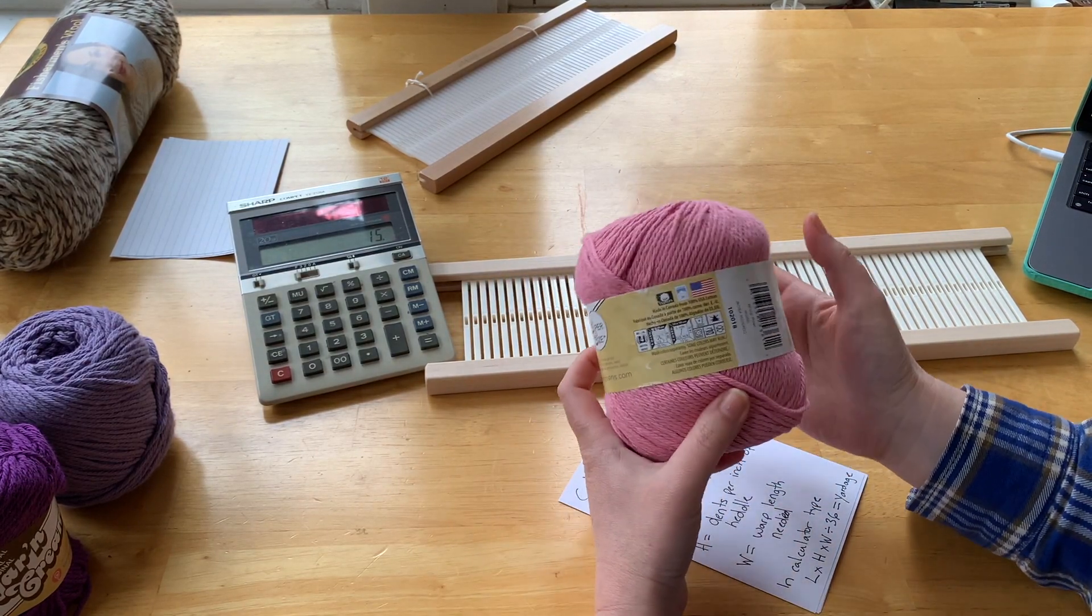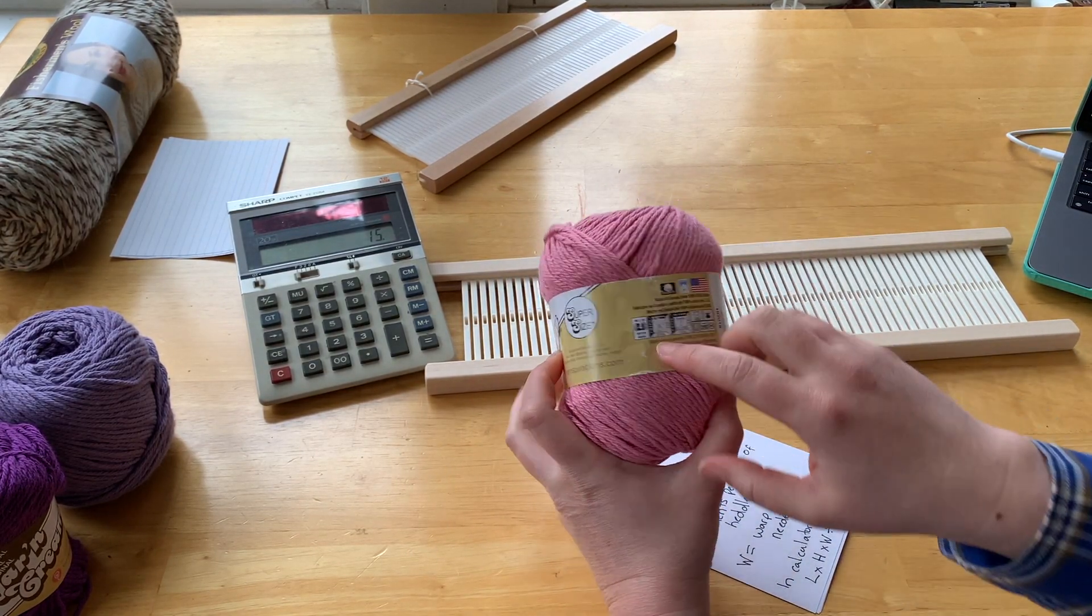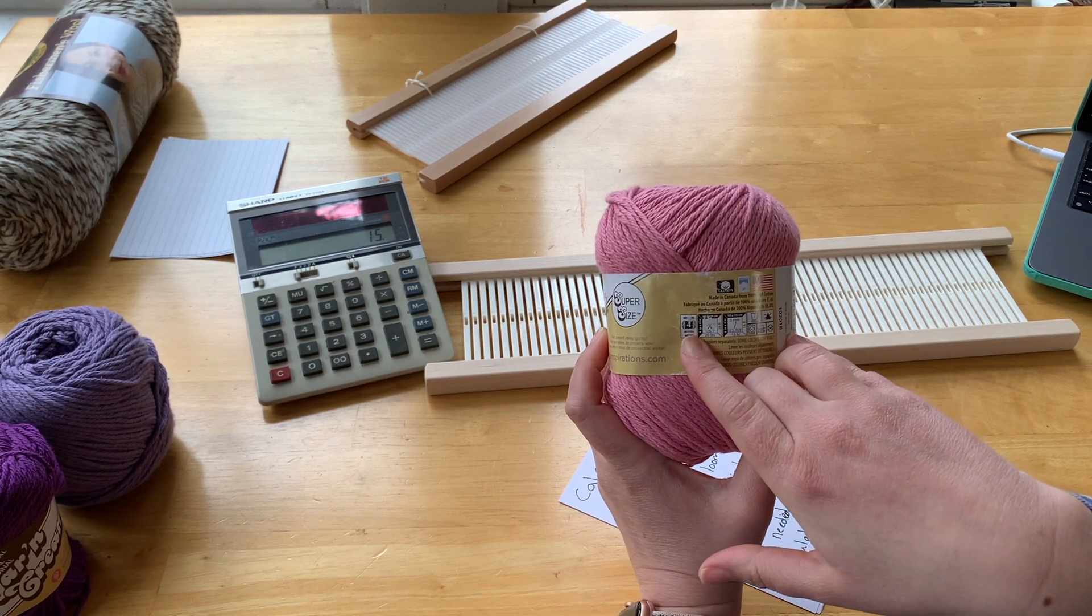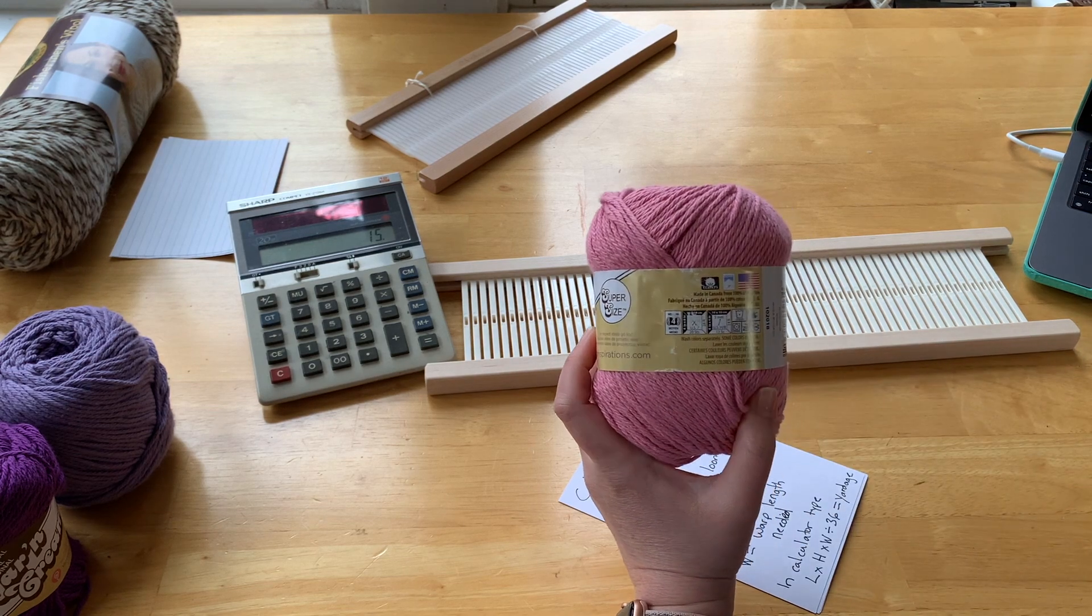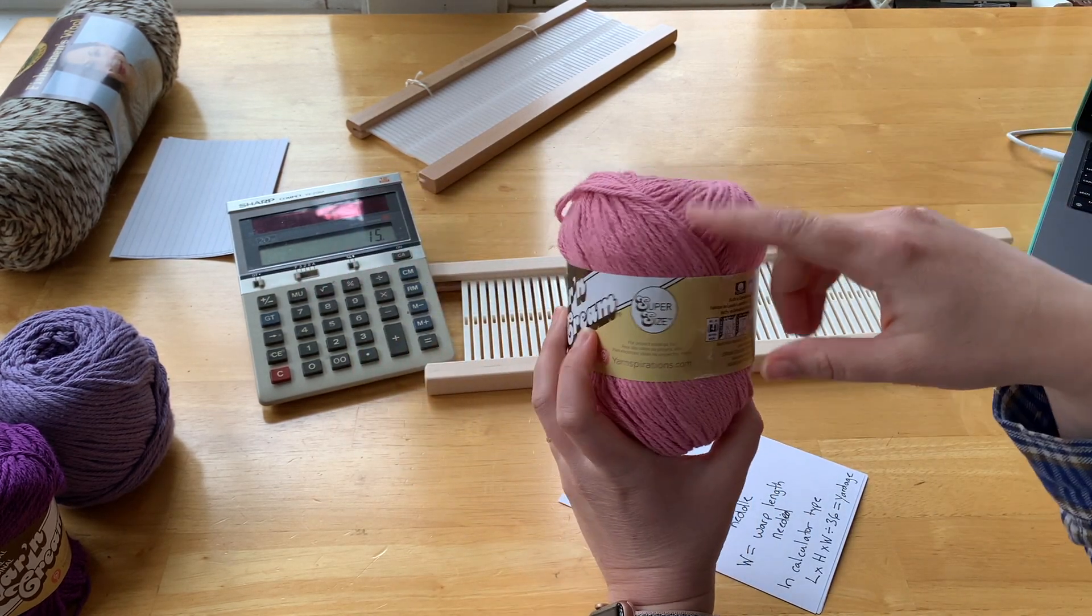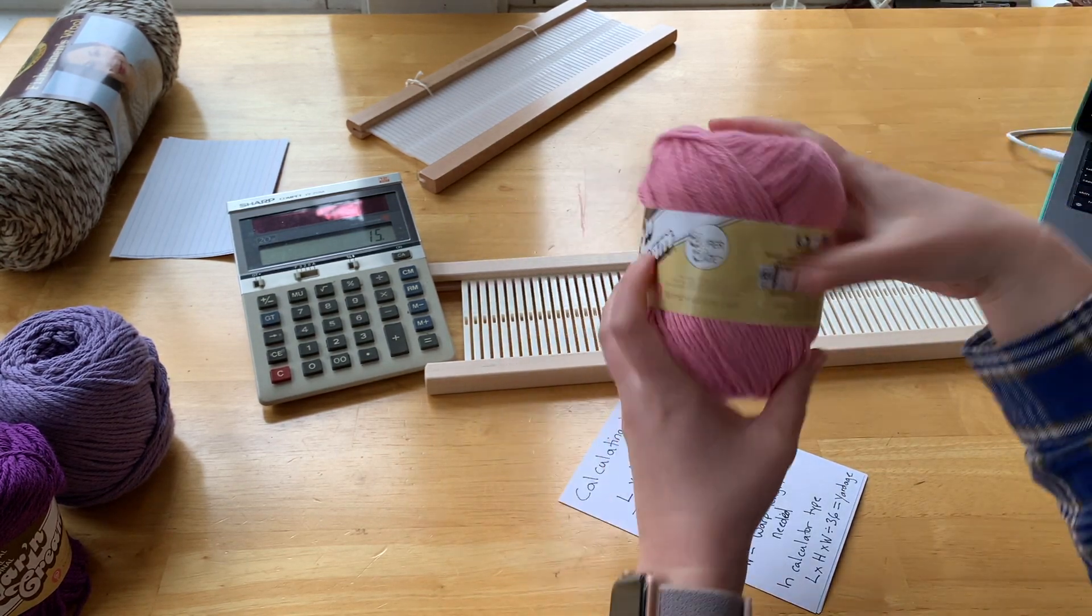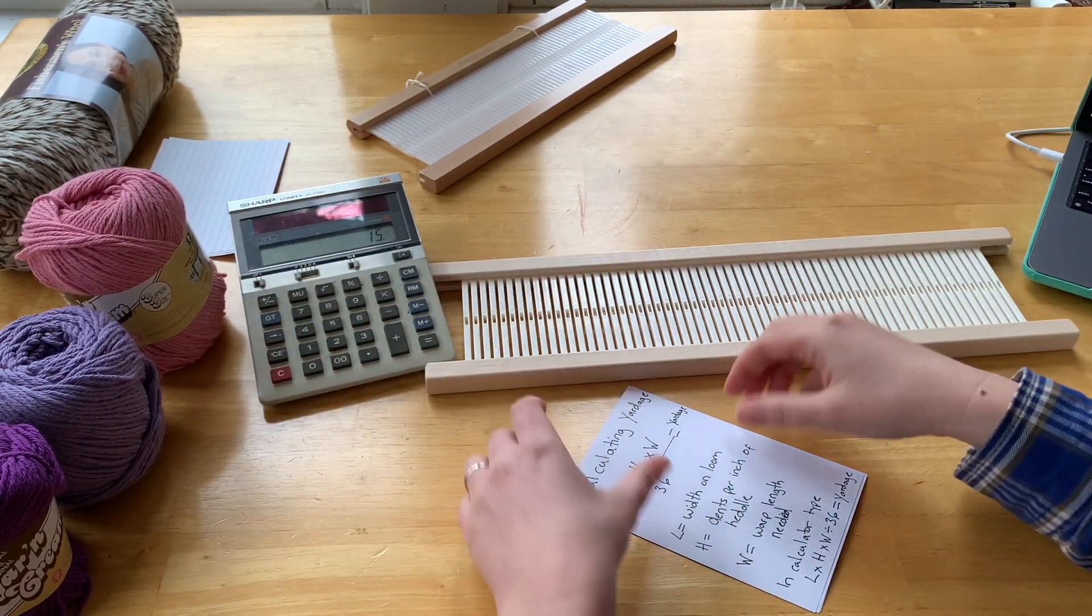This is type 4 weight yarn or number 4 weight, which is the same as worsted weight. And this weaves up really nicely on an 8-dent heddle, and I know that from sampling in the past.